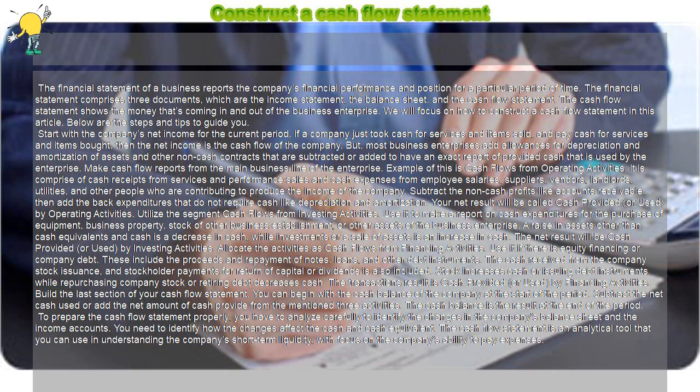Allocate the activities as Cash Flows from Financing Activities. Use it if there is equity financing or company debt. These include the proceeds and repayment of notes, loans, and other debt instruments. The cash received from company stock issuance, and stockholder payments for return of capital or dividends, is also included. Stock issuance or issuing debt instruments increases cash, while repurchasing company stock or retiring debt decreases cash. The transaction's result is cash provided, or used, by financing activities.